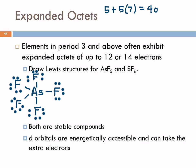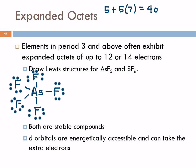This looks like it would be wrong — but I dare you to write something better. The only way we could get an octet on arsenic would be to move one of these fluorines to bond to another fluorine, but we've got so many electrons that it's still going to violate the octet rule. There's nothing else we can do. If we look at the formal charges, they're all zero. Arsenic pentafluoride is okay with this.